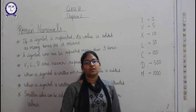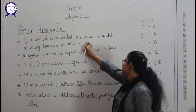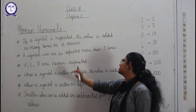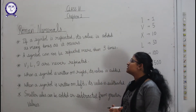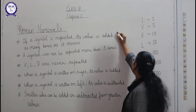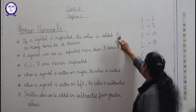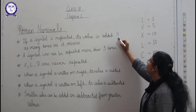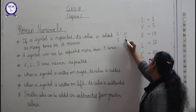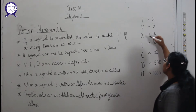Now there are certain rules to write Roman numerals. Rule one: if a symbol is repeated, its value is added as many times as it appears. For example, I written one time represents one. If I repeat I once more it represents two, and if I write I three times it represents three — one plus one plus one equals three.